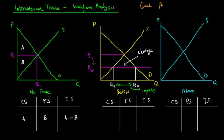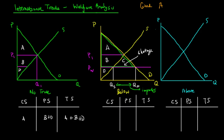Looking at the welfare analysis, let's label all the different blocks A, B, C, and D. With no trade, if we draw the line at P1 and split the area into A, B, and D, the producer surplus would be B and D, and total surplus would be A plus B plus D. With trade, because domestic consumers are able to purchase internationally, their consumer surplus becomes this large triangle — A plus B plus C — and the producer surplus would only be D.